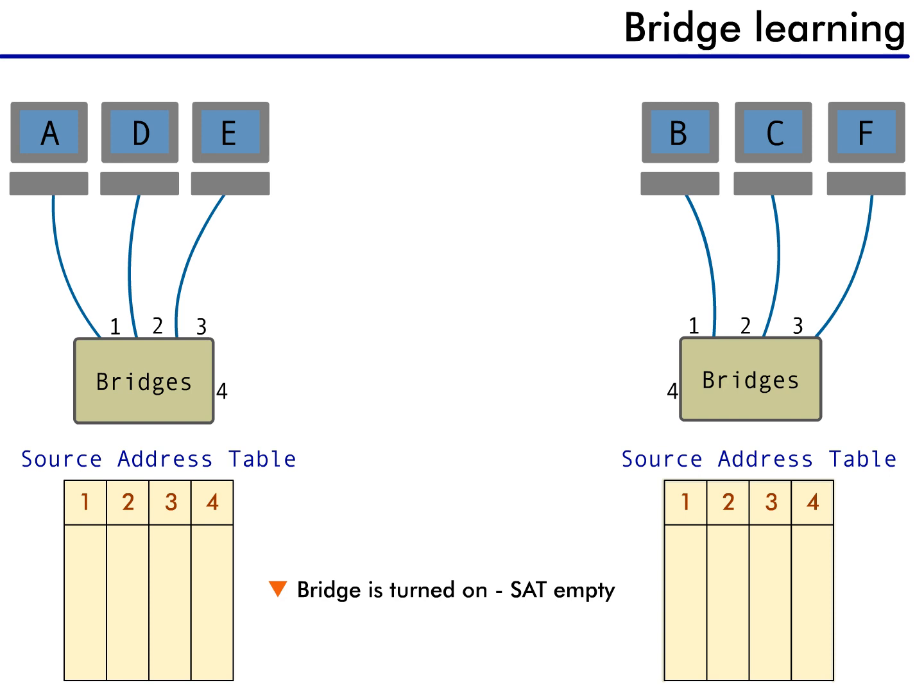With an empty database, the bridges have no idea where any devices are located. So, what does a bridge do when it receives a packet? Well, think back to our last lesson and remember that the bridge floods unknown packets just like a repeater.